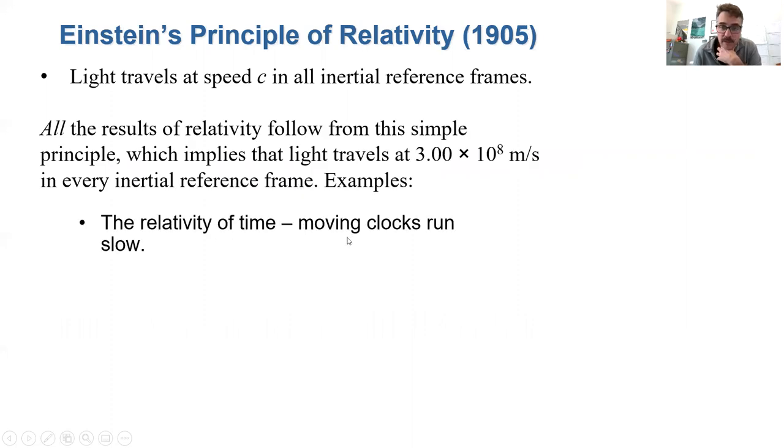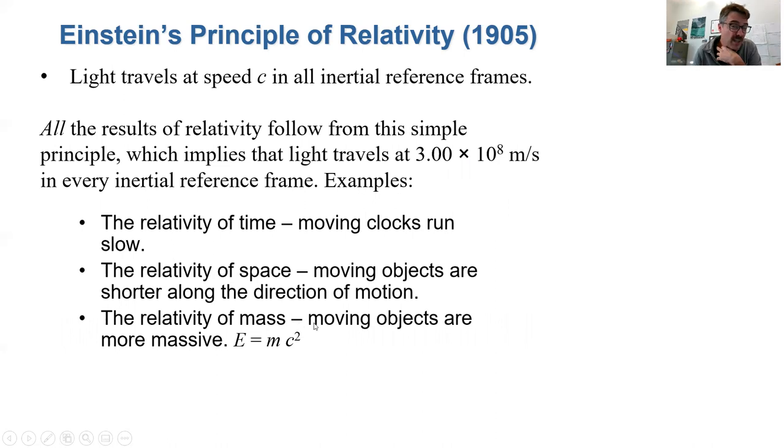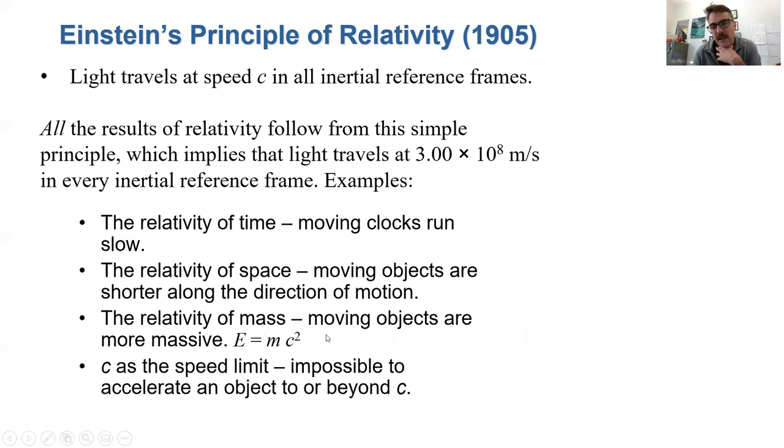So this means that moving clocks run slower. I'll show that to you in a second. Moving objects are shorter along the direction of motion. So the first one is time dilation. The second one is length contraction. It also means that moving objects have sort of more inertia. And they have energy, so energy is E equals MC squared. It also means that as you approach the speed of light, your energy goes infinite. And so you can't accelerate to or certainly not beyond the speed of light. All these things are different, of course, than Newtonian mechanics.